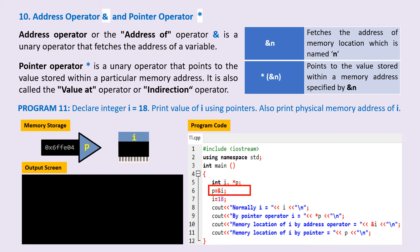On line 7, we assign the value 18 to i. On line 8, we instruct the computer to print the value of i with the usual cout i statement. And so, on the output screen, we have it printed.